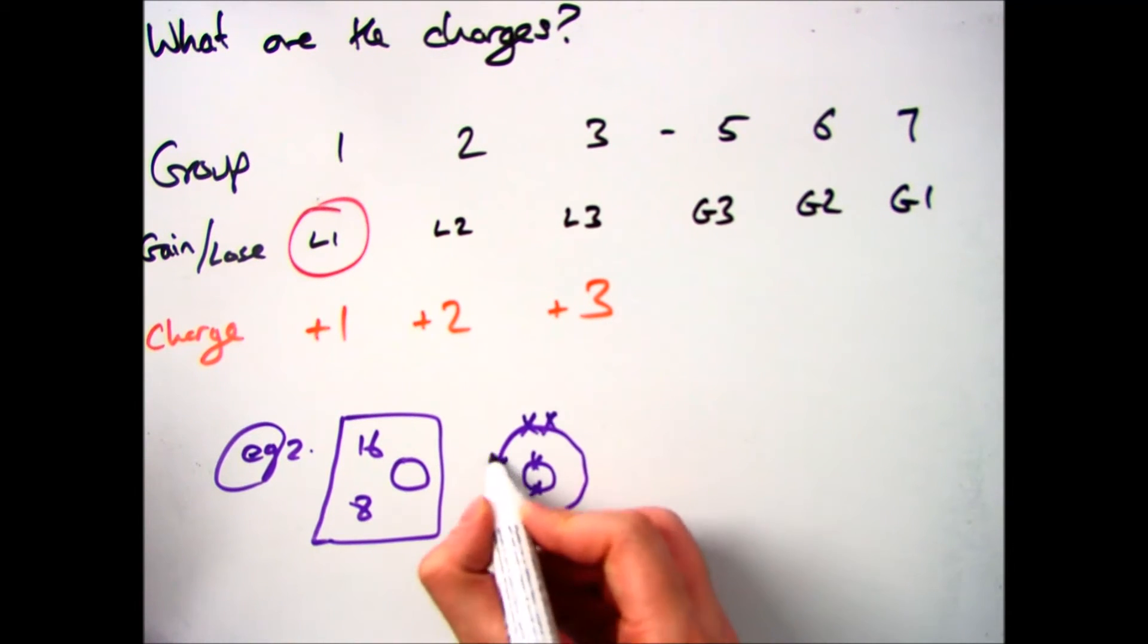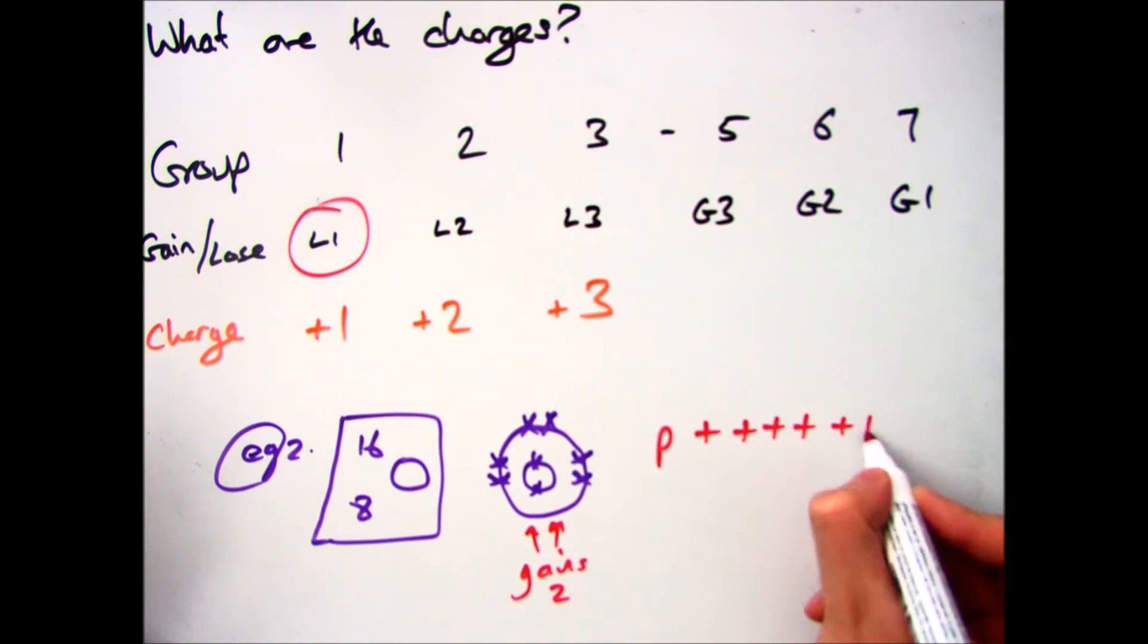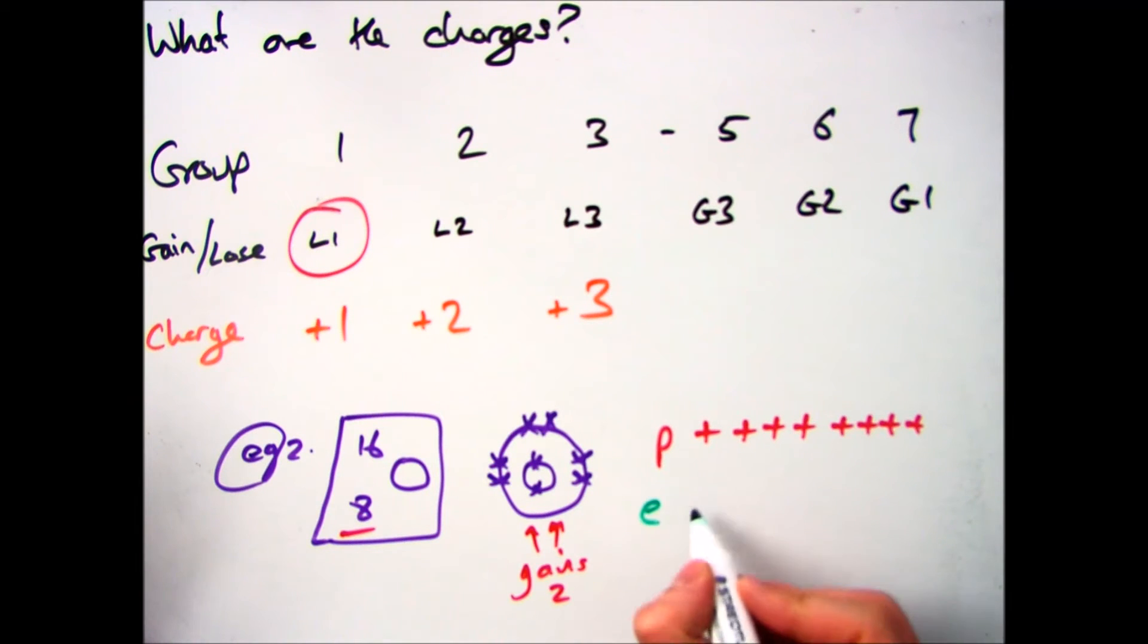So if we do the same for oxygen then, which has got 8 electrons, 2 in the first shell, 6 in the second, you can see that it needs to gain 2. We have 8 protons and 8 electrons.